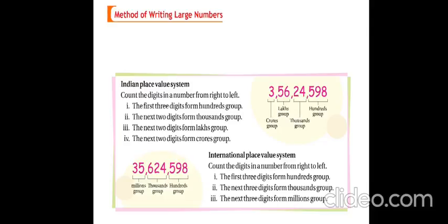In the Indian place value system, counting the digits from right to left, the first three digits from the right are the hundreds group — that is ones, tens, and hundreds. The next two digits represent the thousands group — that is thousand and ten thousand. The next two digits represent the lakhs group — that is lakhs and ten lakhs. And the last two digits represent the crores — that is crores and ten crores.